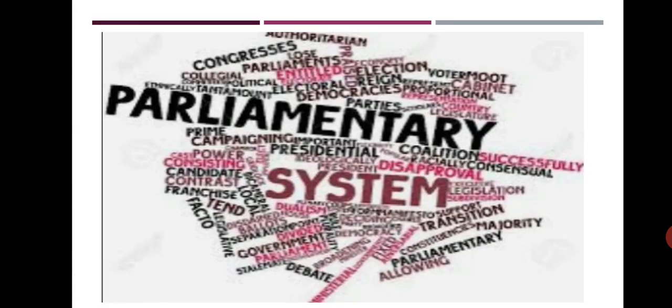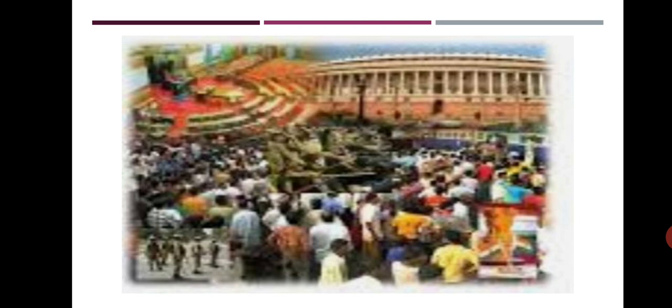The Indian constitution has provided for a parliamentary system of government. In such a system, the parliament — that is the legislature — has the highest decision-making power. Indian parliament includes the president, Lok Sabha or the House of the People, and Rajya Sabha, which is also called the Council of States. The council of ministers that runs the administration emerges from the Lok Sabha and is answerable to the Lok Sabha for all its decisions. In parliamentary democracy, the discussions and debates that take place in the parliament have great significance.